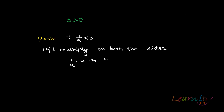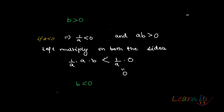This time it will not be greater than the right-hand side, because 1/a is less than zero and a·b is greater than zero — the sign will change, as we covered in prior recordings. This gives us b is less than zero. So when a is greater than zero, b is also greater than zero for the product to be greater than zero; and if a is less than zero, then b must also be less than zero for the product to be greater than zero.